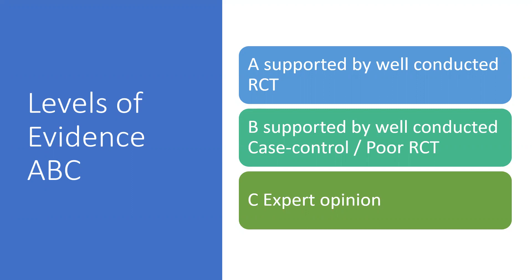Level A evidence includes those supported by well-conducted RCTs, while level B evidence includes those supported by well-conducted case-control studies or poorly conducted randomized control trials, while evidence C includes expert opinions.